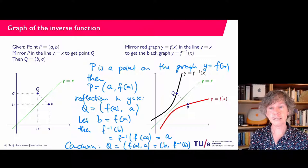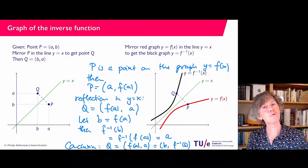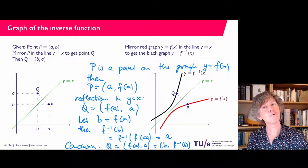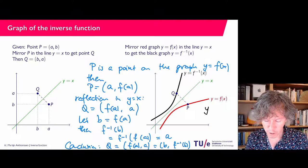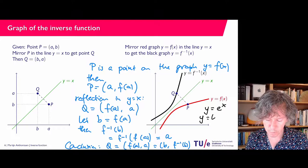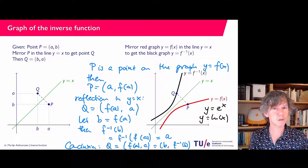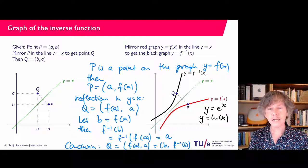Wrapping up: if you have the graph of a function, you mirror the whole graph into the line y equals x, and then you have the graph of the inverse function. You may already know an example of this. Hopefully you recall from high school that if you have y equals e to the power x, its inverse is y equals ln x, the natural logarithm. If you plot these two functions, you will see that one is the mirroring of the other.